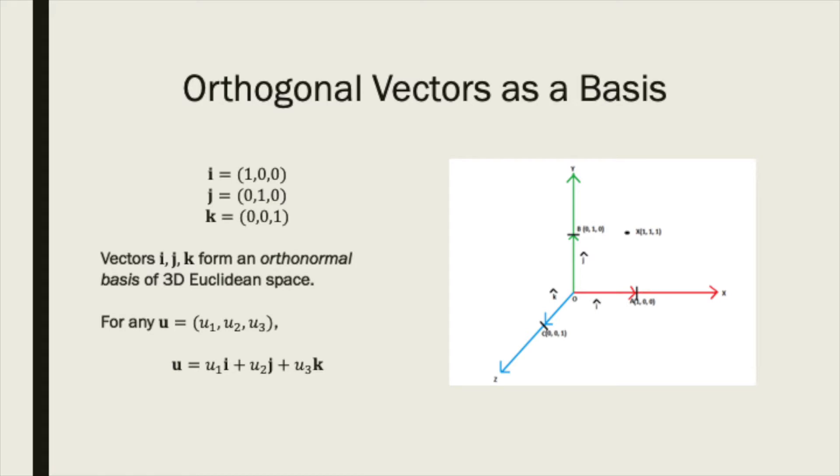Let's return to our analogy with vector spaces. The unit vectors i, j, and k form what is called an orthonormal basis of three-dimensional Euclidean space. This means that for any vector u in the space, you can write u as a linear combination of the three vectors i, j, and k.